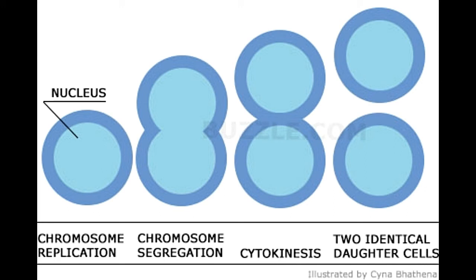Step 2: Growth of Cell. The second step in binary fission is growth of the parental cell. After duplication of DNA, the parent cell is ready to reproduce by binary fission. As a preparatory step, it grows considerably and increases its size. At the same time, the two circular DNA strands migrate and attach themselves to the plasma membrane at different sites.